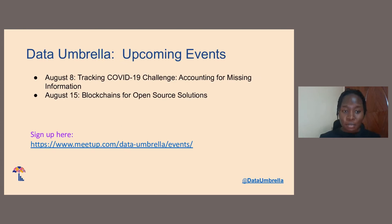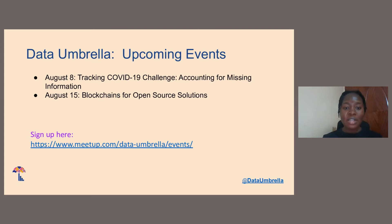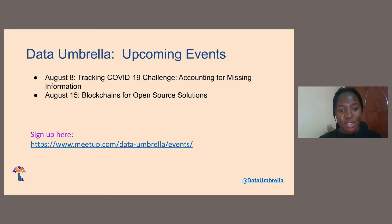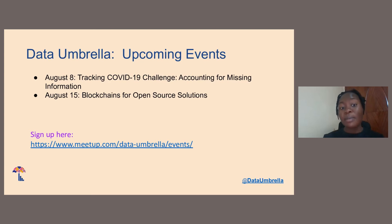We have two upcoming events in August. One will be on tracking COVID-19, where we will be dealing with challenges on how to handle missing information. And on August 15th, we'll have an event on blockchain for open source solutions. You can sign up for events on our Meetup page at meetup.com at dataumbrella events — all our events are listed there and you can RSVP to get all the information on how to join.